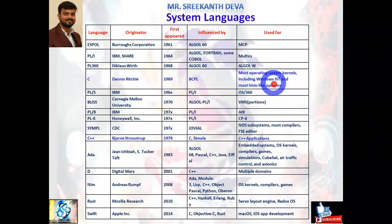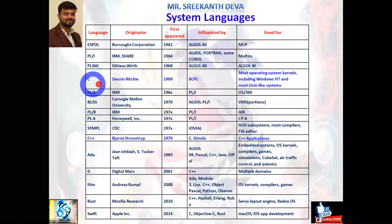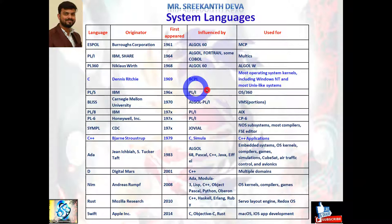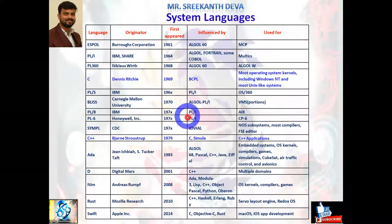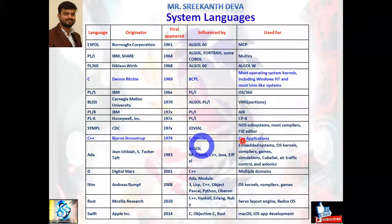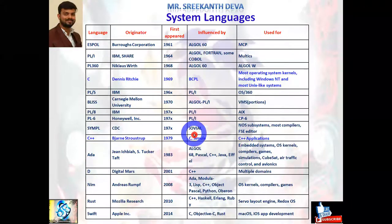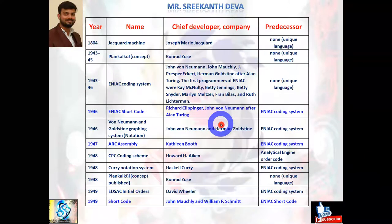Looking at various system languages: C language was introduced by Mr. Dennis Ritchie in the year 1969, influenced by BCPL. It is used for most operating systems including the kernel, such as Windows NT and most Unix-like systems. Other system languages include C++, introduced by Stroustrup in 1979, as well as Ada, D language, Rust, and Swift — all used for system-related purposes.